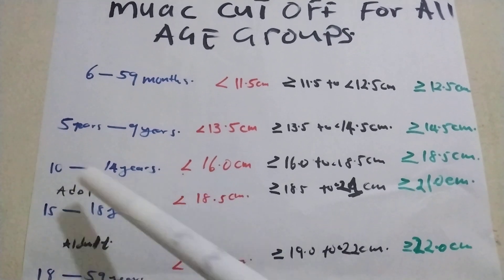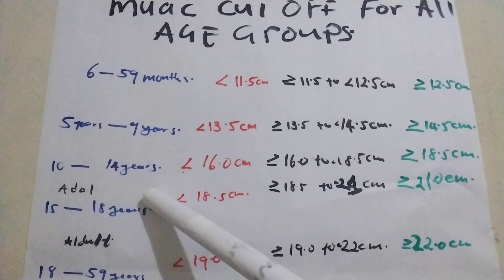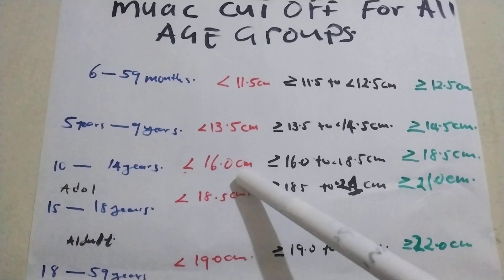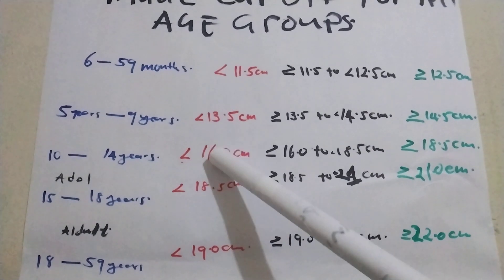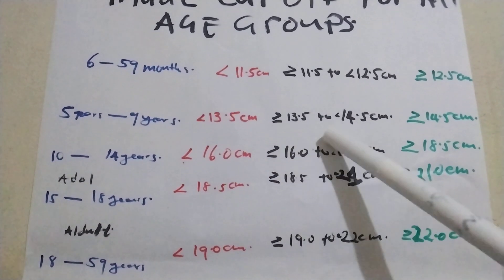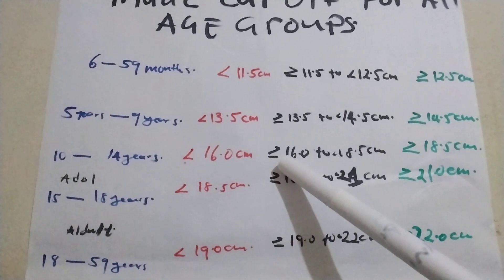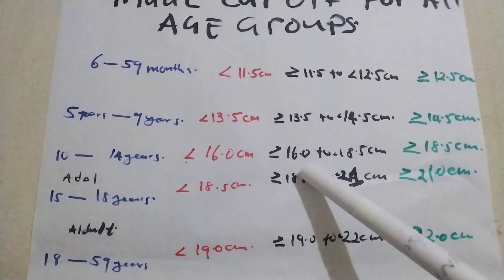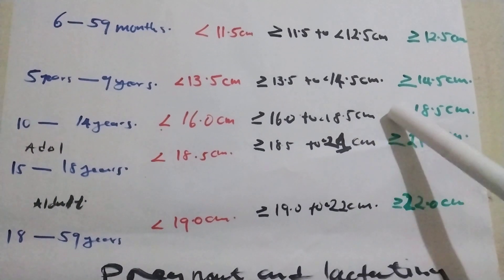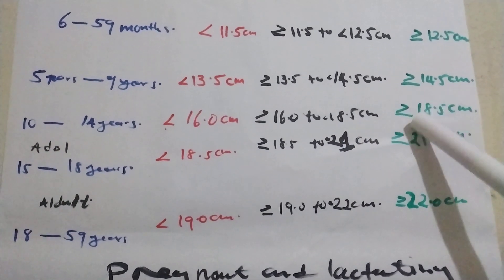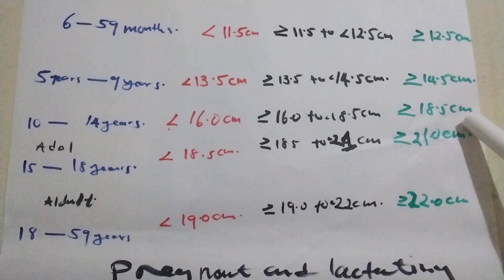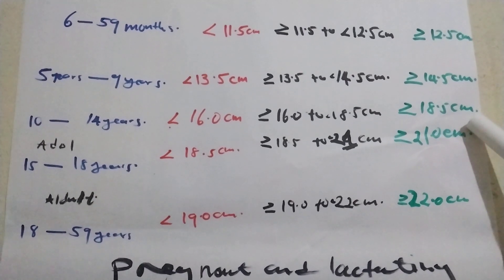From 10 years to 14-15 years: SAM is less than 16.5 centimeters. Moderate acute malnutrition is 16.0 to 18.5 centimeters. Normal is 18.5 centimeters and above.